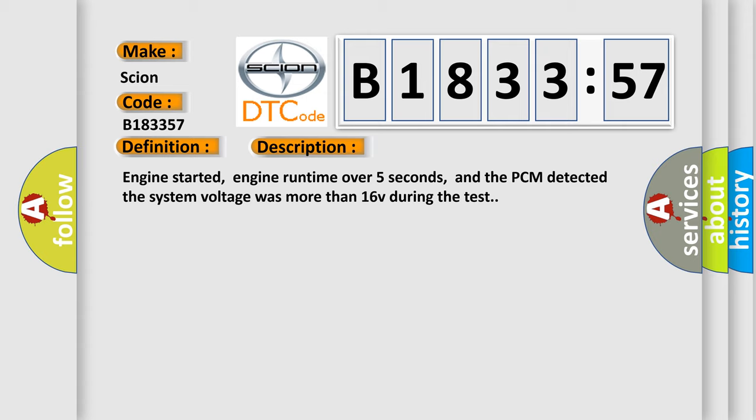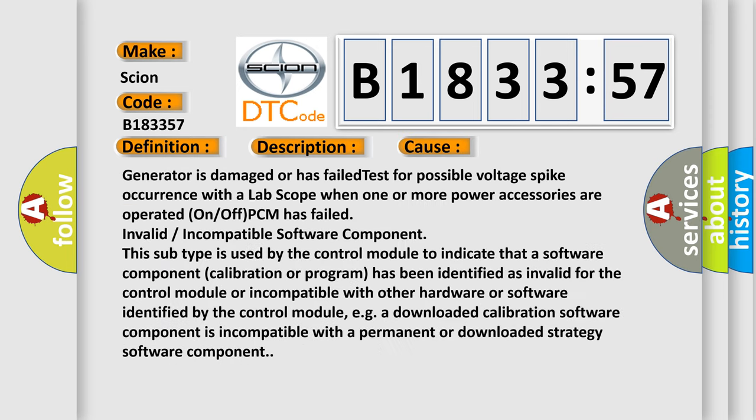And now this is a short description of this DTC code. Engine started, engine runtime over five seconds, and the PCM detected the system voltage was more than 16V during the test. This diagnostic error occurs most often in these cases: